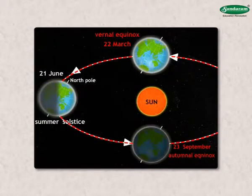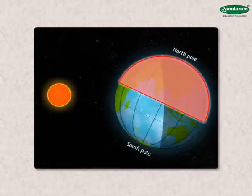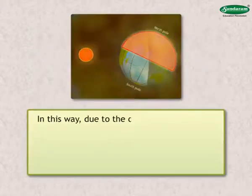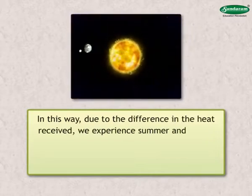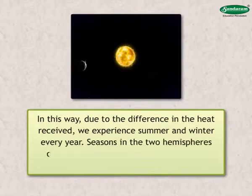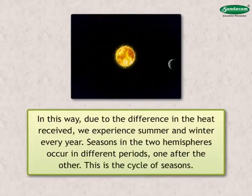During this period, the days are longer in the southern hemisphere and so there it is summer, whereas it is winter in the northern hemisphere at the same time. In this way, due to the difference in the heat received, we experience summer and winter every year. Seasons in the two hemispheres occur in different periods one after the other. This is the cycle of seasons.